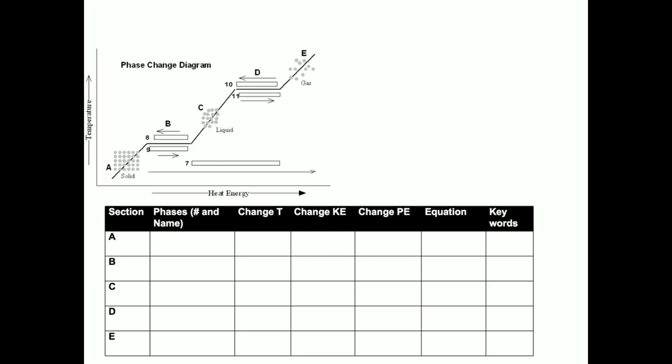A phase change diagram shows the changes as heat is added or removed from a sample at a constant rate. Like if you put a pot of water on the stove and you turned it on to medium and didn't increase or decrease its heat. These are often called time-temperature graphs.